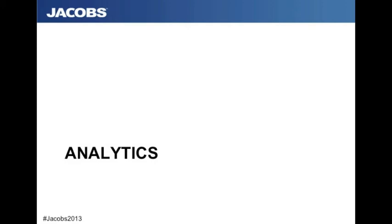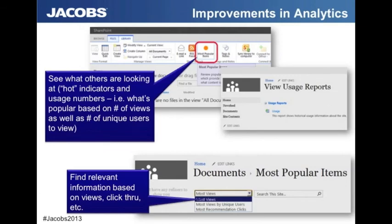Analytics is our final area. There's been a big change — it's no longer under Site Actions Web Analytics. You can now access it straight from within the ribbon. On the ribbon there is now most popular items, so you'll be able to click on there and see what others are looking at. You'll be able to download usage reports in an Excel format and make edits as required. You'll also have the ability to look at the clicks people are doing — the most views, the most views by a unique user, the most recommended clicks — driven by the advanced knowledge from FAST.